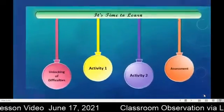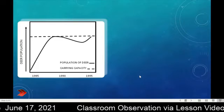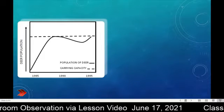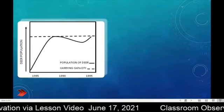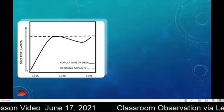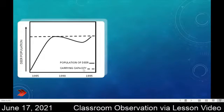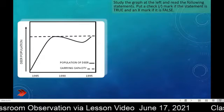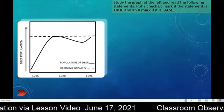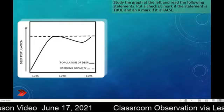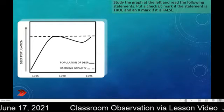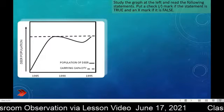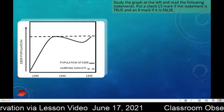Now we will proceed to activity two. We have another graph, this time showing a deer population. The years 1985, 1990, and 1995 are on the horizontal axis, and the deer population is on the vertical axis. The carrying capacity is shown in broken lines. Study the graph and read the following statements. Put a check mark if the statement is true and an X mark if it is false.